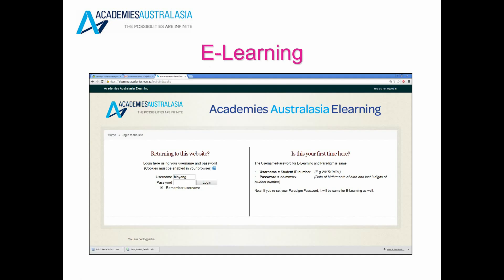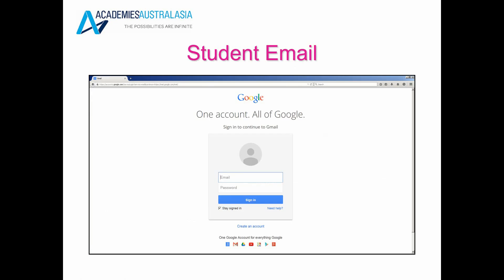This is the access page for the e-learning system. This is the system you will use to access your classwork, your assessment information, and you will use this regularly. Here you will also have a username and password which will be provided to you with more information and instruction on how to navigate through and set up this platform. This is also the platform where you can log in to your Academies Australasia email. You will have an email address set up for you and a password, which will be provided with instruction on how to access your email inbox.